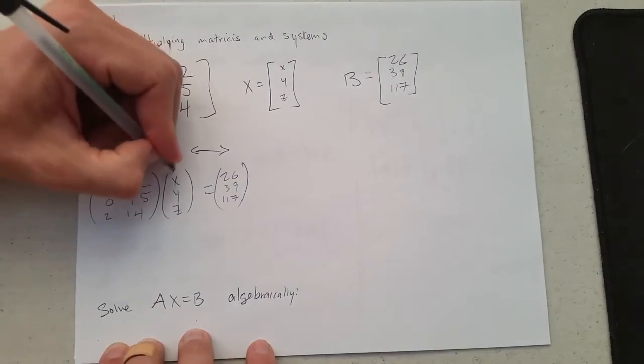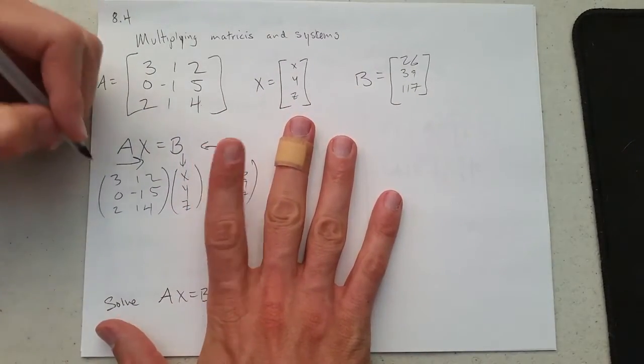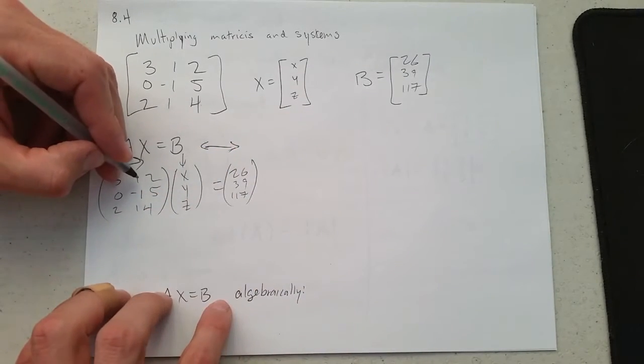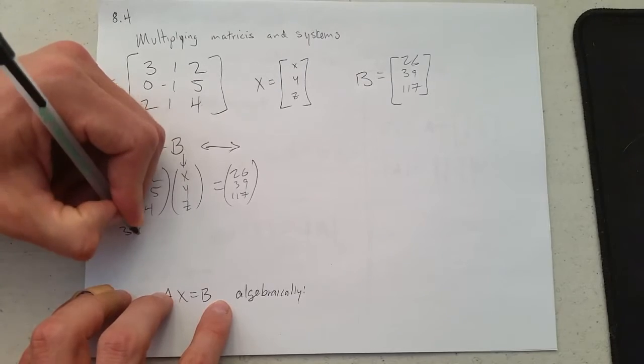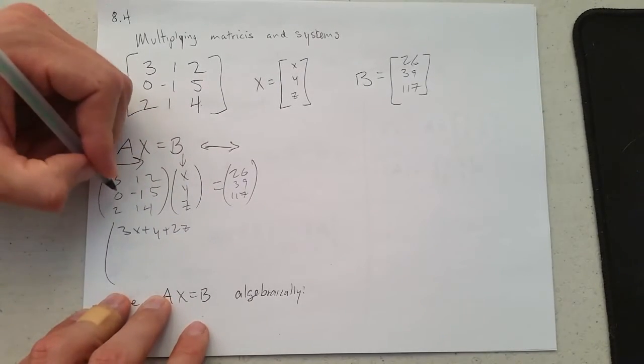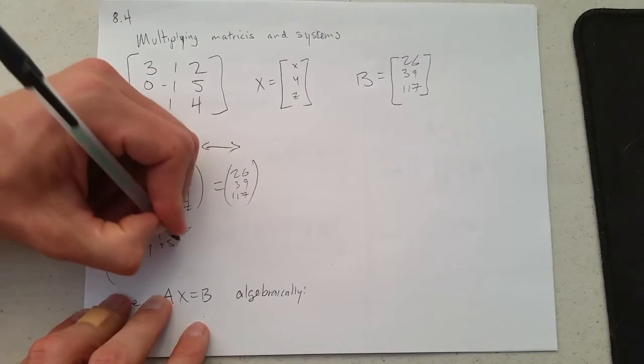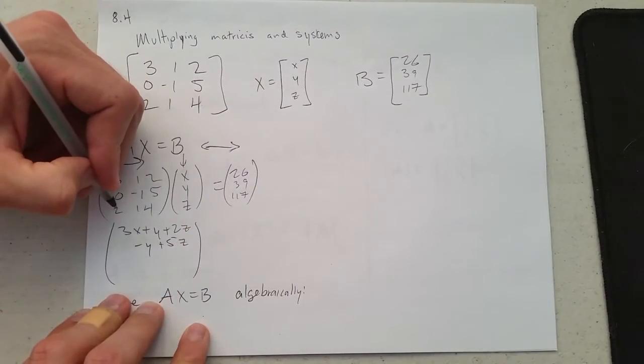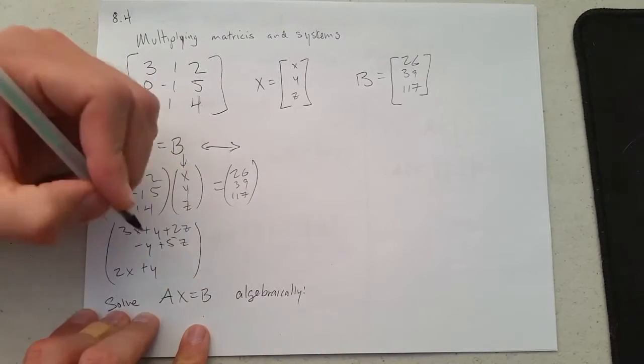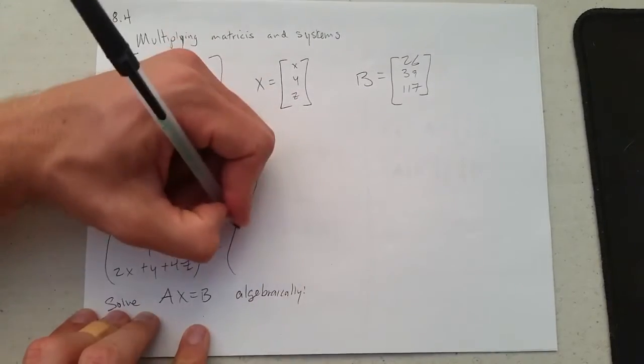I'm going to go across, down. So we have, just carefully blocking this - well, there's really no reason to block anything there. We'll just go 3x plus y plus 2z, 0x minus y plus 5z, and last up, 2x plus y plus 4z. I'm just copying over the right side.